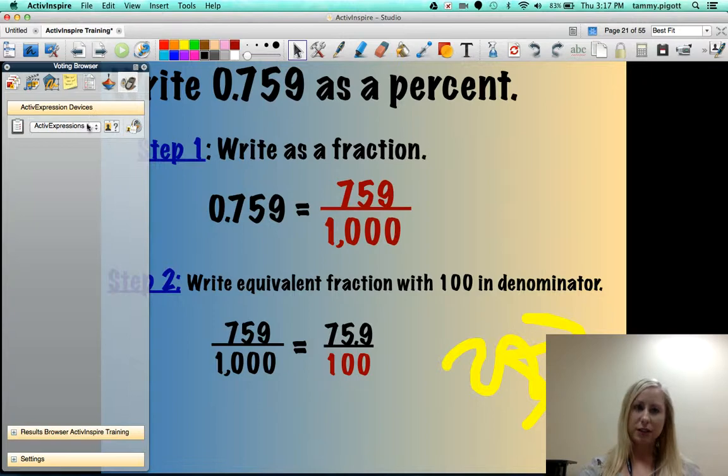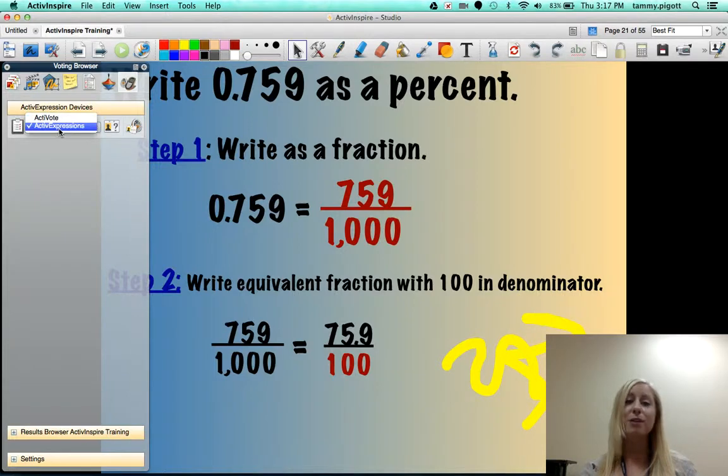Now you'll see a couple different options on mine. This one is for active votes. So I'm going to show you and click on this and choose it was on active expression. So I'm going to change this little drop down menu right here to active vote.